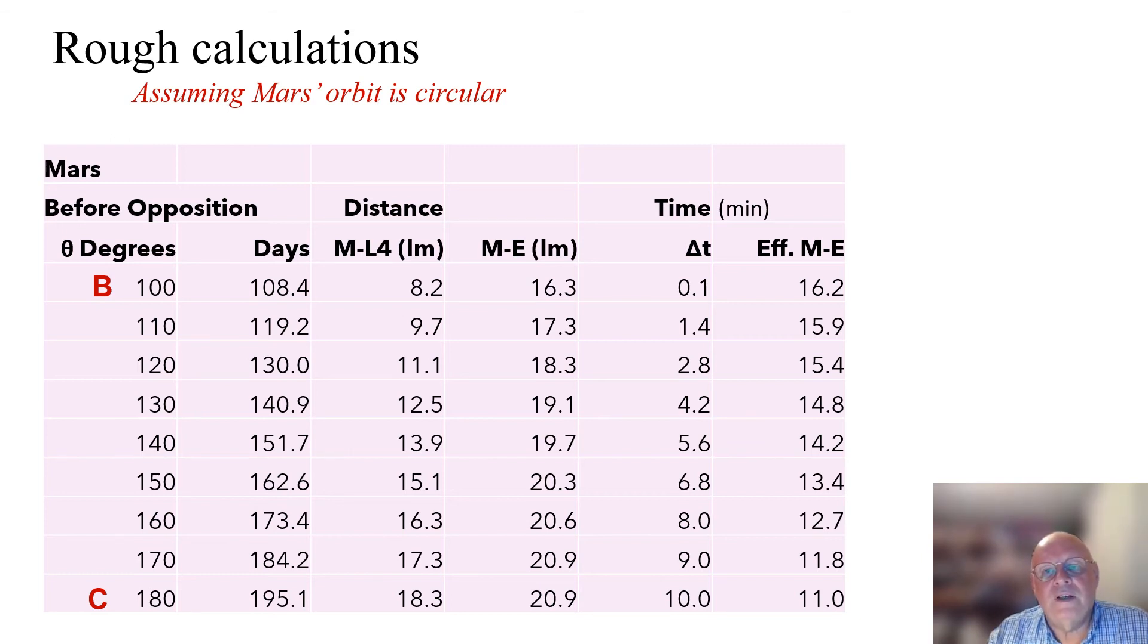As you can see, Earth and Mars are always well separated, being between 16 and 11 light minutes apart.